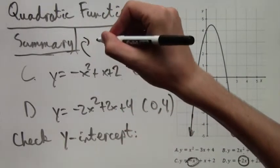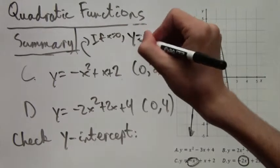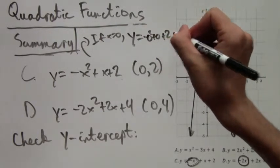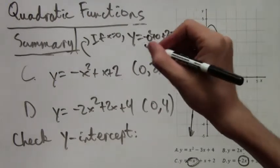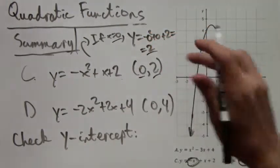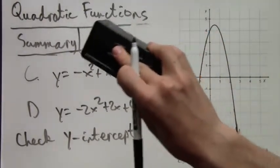What I mean is that if we plug in x equals 0, let's say into this function for answer choice C, we plug in x equals 0 and we just get y equals 2. So we get the point (0,2) and similarly for answer choice D you'll get the point (0,4).